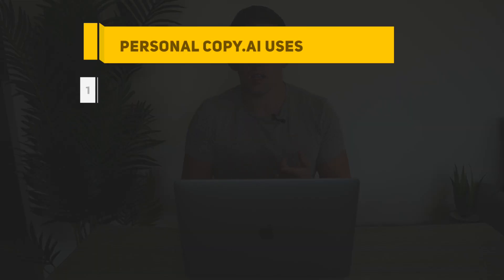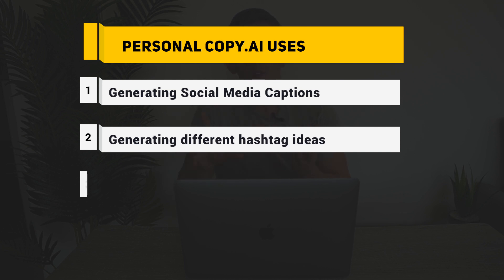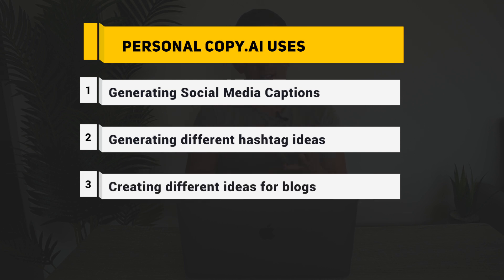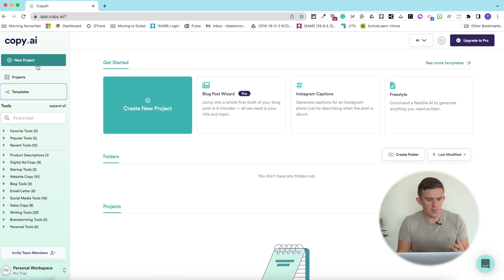Copy.ai is a fantastic website for generating ideas and content. Personally I use it for content creation — I don't use it so much for lessons, but I have thought of different lessons you could do using this. I use it for things such as generating captions, generating different hashtag ideas, creating outlines for blogs, and also when I'm struggling to think of product descriptions. It reduces some of the cognitive strain, and that's what we want to do for pupils — reduce cognitive strain so they can be more creative in their writing.